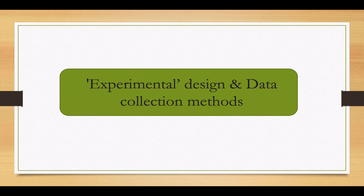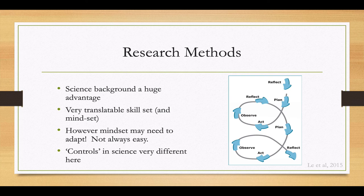In science, we think about doing experiments in a particular way — how we get the data and how we do the analysis. There's a similar approach here, yet very different systems and environments. Coming from science is a huge advantage for research methods; we automatically have a very translatable skill set and mindset very set on data. Controls in science are a norm, and it's very important that we don't disadvantage any of our learners when trying out new interventions. This idea of action research involves plan, act, observe, and reflect — onto the next cycle, and so on.